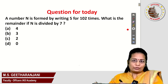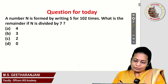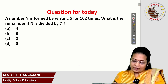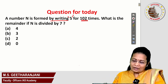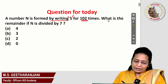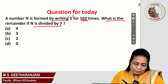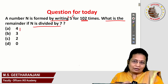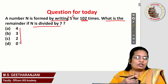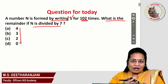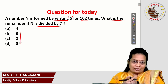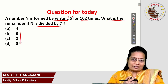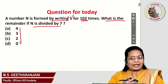Question for today: A number n is formed by writing 5 for 102 times. What is the remainder if n is divided by 7? Your options are given, and they are all single-digit numbers. As usual, you can post your answer in the comment section. We will meet you in the next session with another interesting question. Thanks for watching.